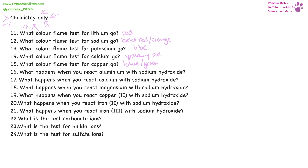When you react aluminium with sodium hydroxide, you are going to get a white precipitate, which, if you keep adding more, will then dissolve.